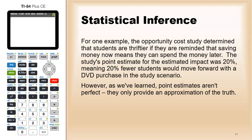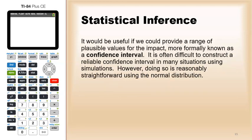However, as we've learned, point estimates aren't perfect - they only provide an approximation of the truth. It would be useful if we could provide a range of plausible values for the impact, more formally known as a confidence interval.